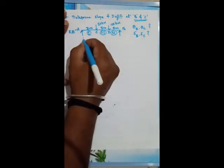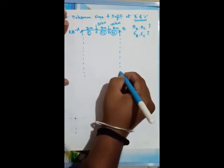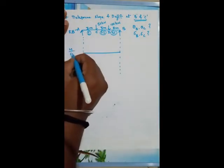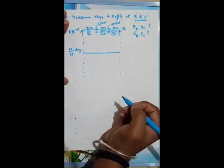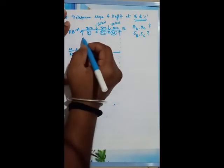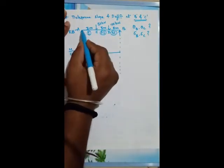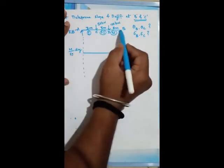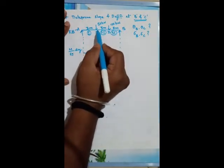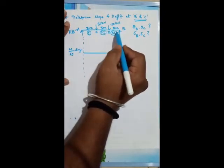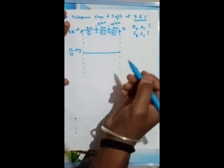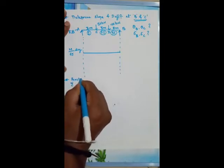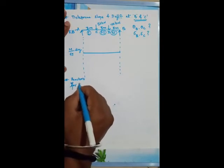The given problem is the real beam (original beam). For this real beam, we need to first draw the bending moment (M/EI) diagram. First we calculate the reactions to find the moments. Moment at A is 0 and moment at B is 0 (since both are simple supports — roller or hinge). We need to calculate moments at C and D, for which we require reactions Ra and Rb.